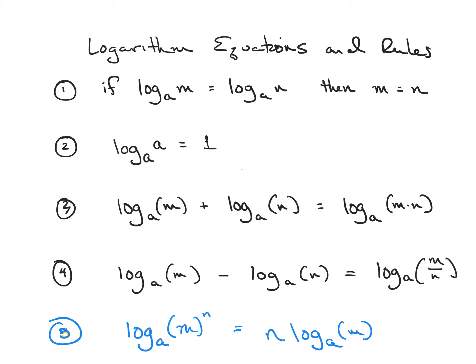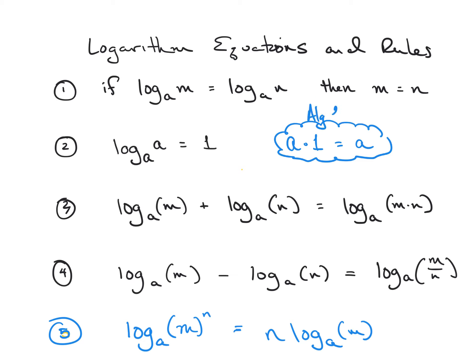Rule number two: if you have log base A of A — meaning the logarithm with some base of its same value — then the value is one. In our problems we're actually going to work the opposite way, using the multiplicative identity of one: if you take a number and multiply it by one, you still get A. So we're going to use this algebra one rule to help solve our logarithms.